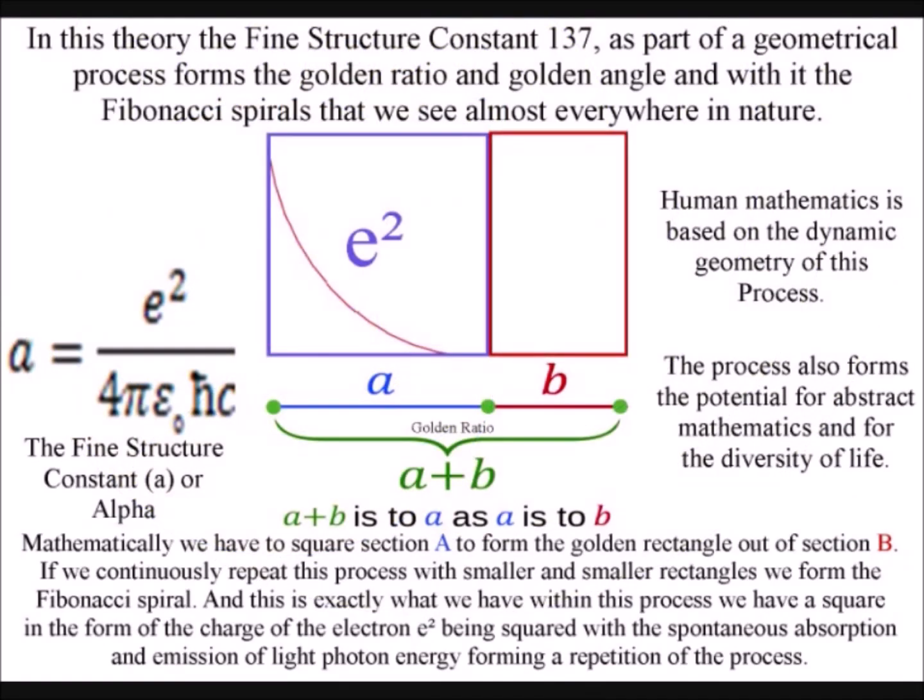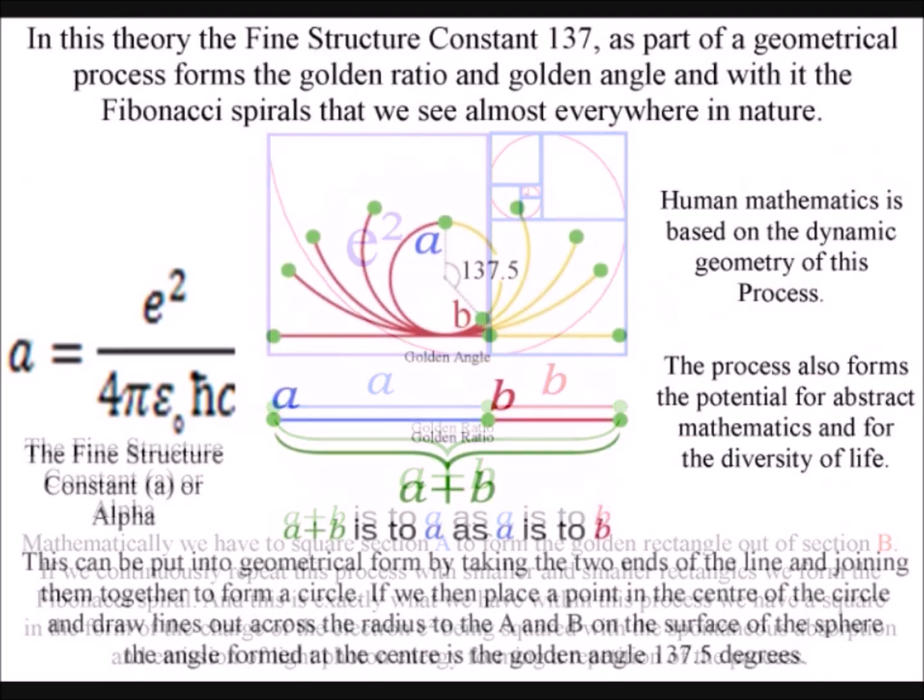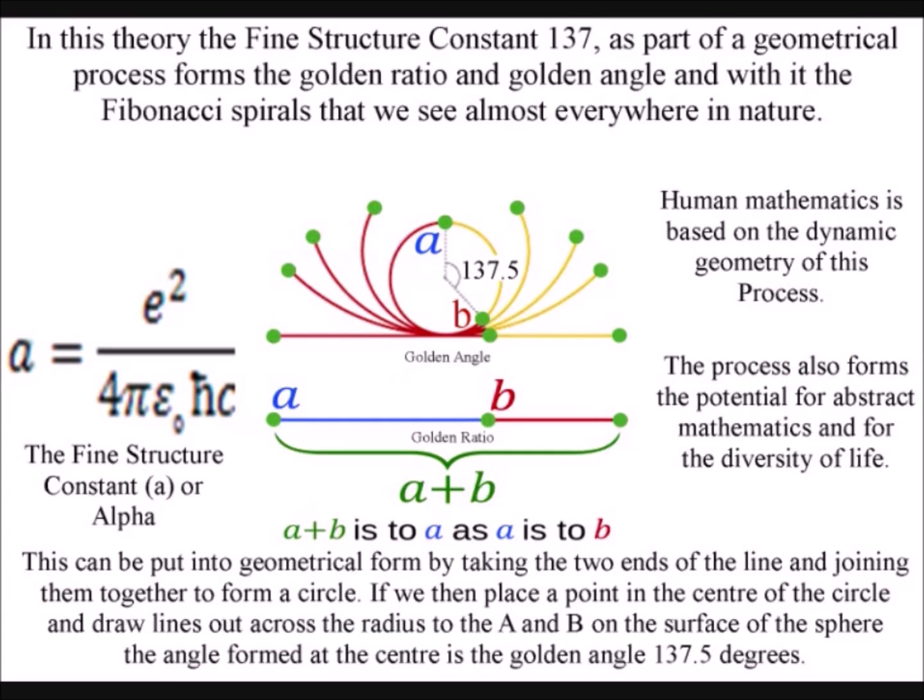This forms the potential for the most beautiful of geometrical shapes, the Fibonacci spiral. We have a process of spherical symmetry forming and breaking, that forms the broken, imperfect geometry of everyday life.